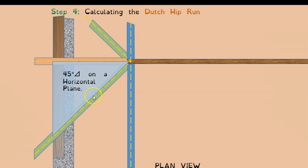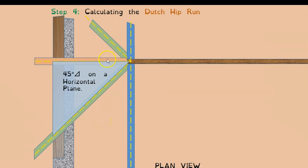To find the actual hip run distance, take the Dutch crown run and multiply it by the square root of 2 — this only works for a 45-degree right-angle triangle to give you the longer side. Alternatively, place two rafters at 90 degrees on a framing square, measure the Dutch run both ways, and read the diagonal. The rise of the hip is the same as the rise of the Dutch crown, so you now have both the rise and run of the hip rafter.